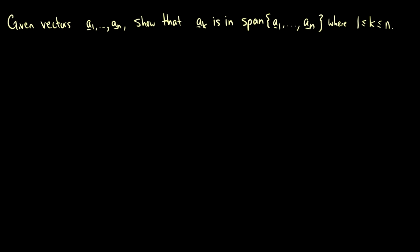Here is a conceptual question — it might seem difficult at first, or to some it might seem obvious. Given vectors a1 through an, we want to show that vector ak is in the span, where k is between one and n. This could be a2, a43, a1, or an — any of them. We want to show that ak is in the span.